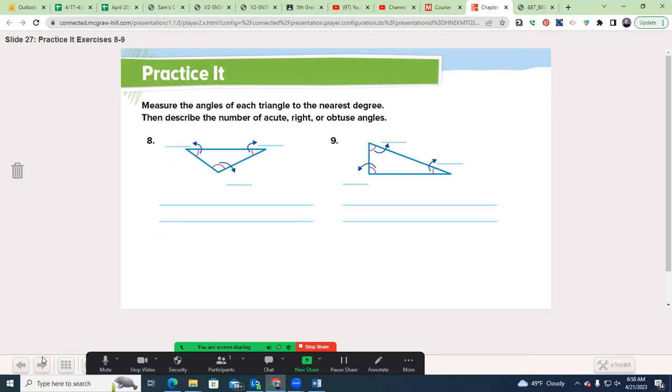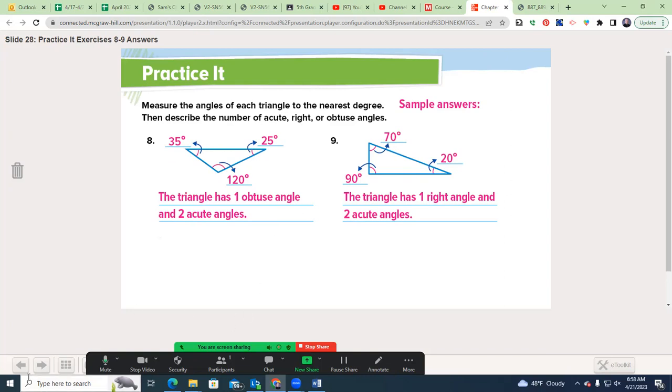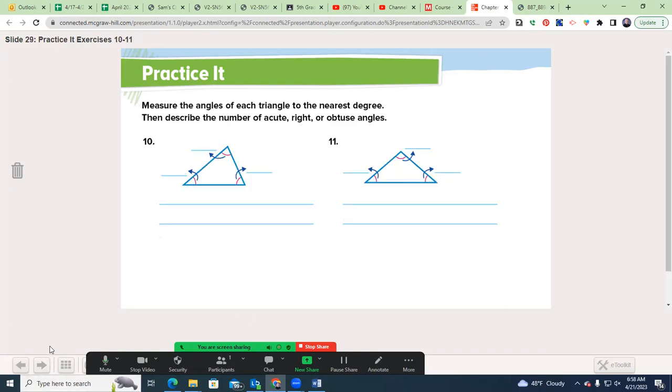Now we're going to pull up that protractor again. So measure the angles of each triangle to the nearest degree, describe the number of acute, right or obtuse angles. Go ahead and pause the video now. Welcome back. One twenty, thirty five and thirty five, one obtuse two acute. Here one right and two acute. We call this a right triangle and an obtuse triangle.